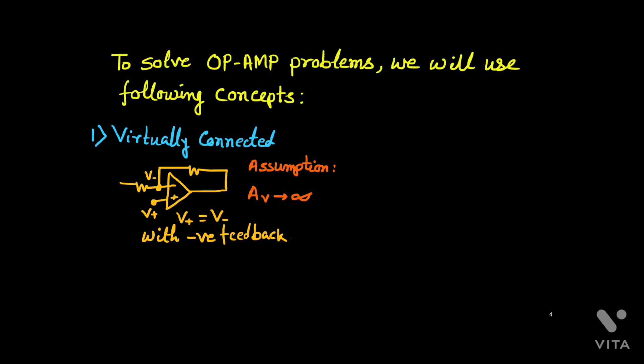The first concept is virtual short. You will get this concept if the circuit has negative feedback and the op-amp is ideal with infinite voltage gain. Then the terminal potential V+ and terminal potential V− become the same — they are virtually connected.